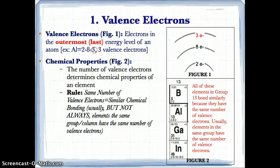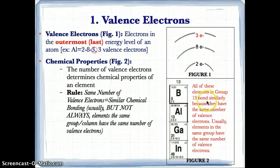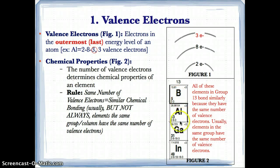Usually, but not always, elements in the same group or column have the same number of valence electrons, and because they have the same number of valence electrons, that means they have similar chemical bonding properties. For example, all the elements in group 13 — B, Al, Ga, and In — form chemical bonds in a similar way because they're in the same vertical column. If you look at the last number in their electron configurations, you'll find that B, Al, Ga, and In all have three valence electrons.